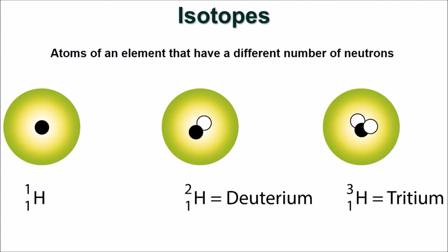Isotopes are atoms of an element that have a different number of neutrons. The isotopes of elements are distinguished by their mass number.